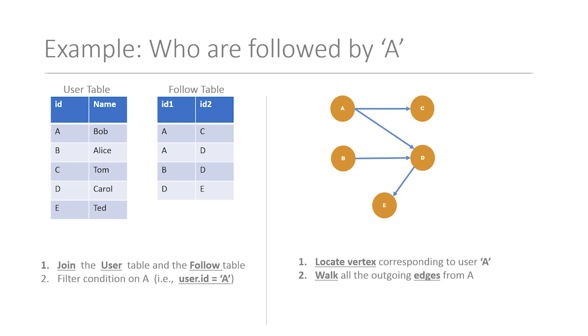In the graph model, the same data could be modeled as vertices and edges, where vertices represent the user and the edges from one vertex to another represent that one user follows another. Given this data model, let's assume our query is: given a user, find out all the users being followed by this user. In the relational world, this query is executed by joining the user table and the follow table, with a filtering condition to identify user A.